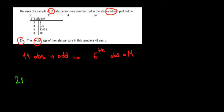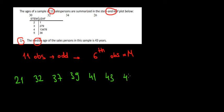Then we have 32, 37, 39. We go below: 41, 43, 44, 47, 48. One more row below: 53 and 56.